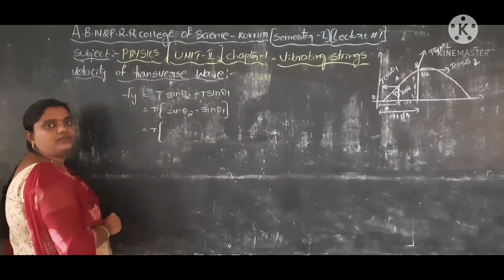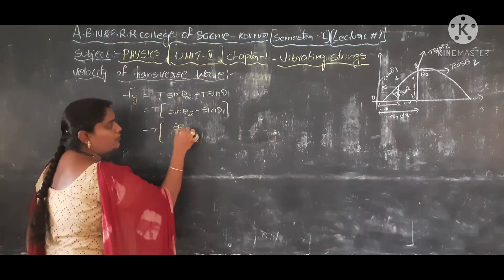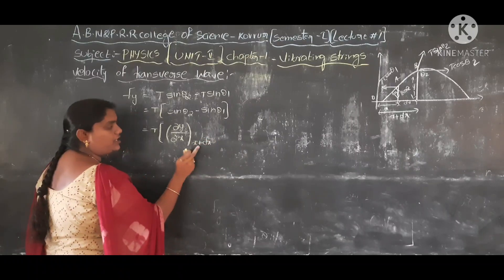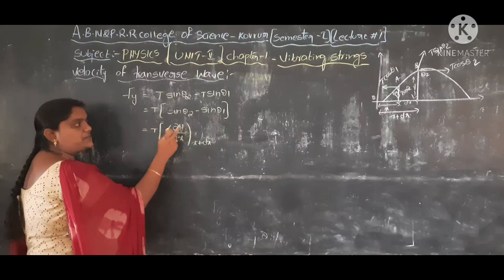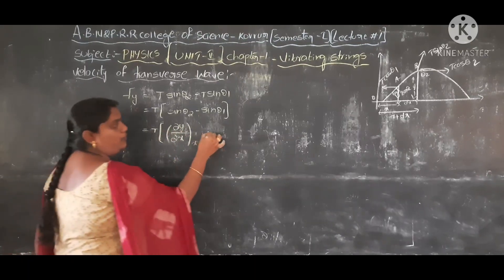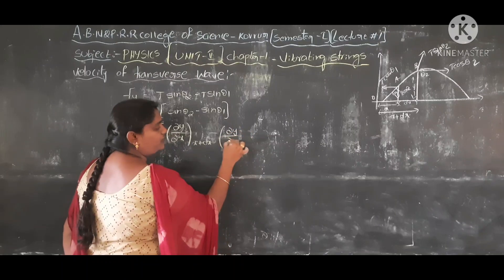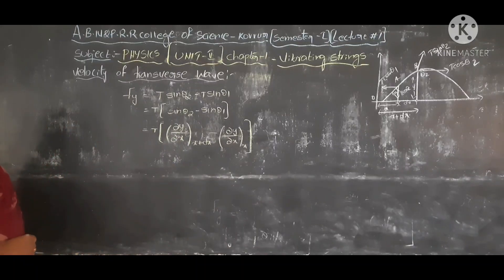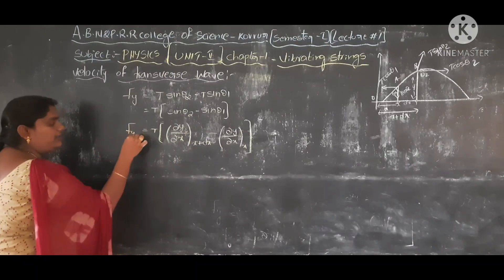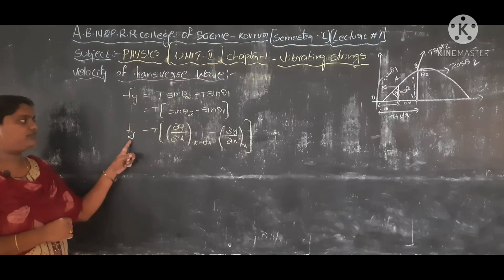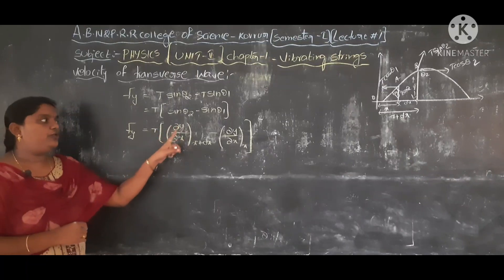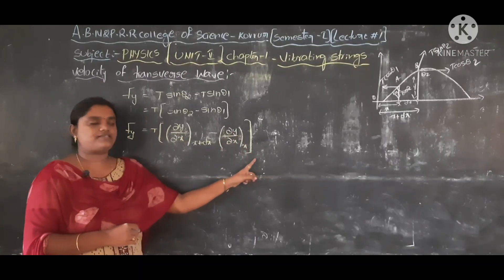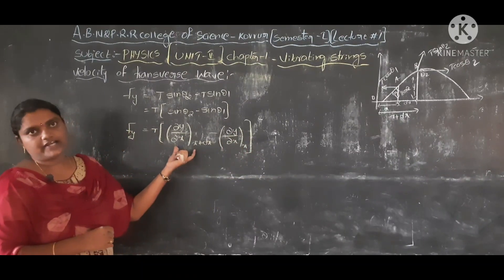θ₂ is the displacement value at point B, that is ∂y/∂x evaluated at x + dx. Point B is at distance x + dx. Then the vertical displacement is ∂y/∂x at x + dx minus ∂y/∂x at x. So the force in the vertical direction is: Fy = T [∂y/∂x at (x+dx) − ∂y/∂x at x].